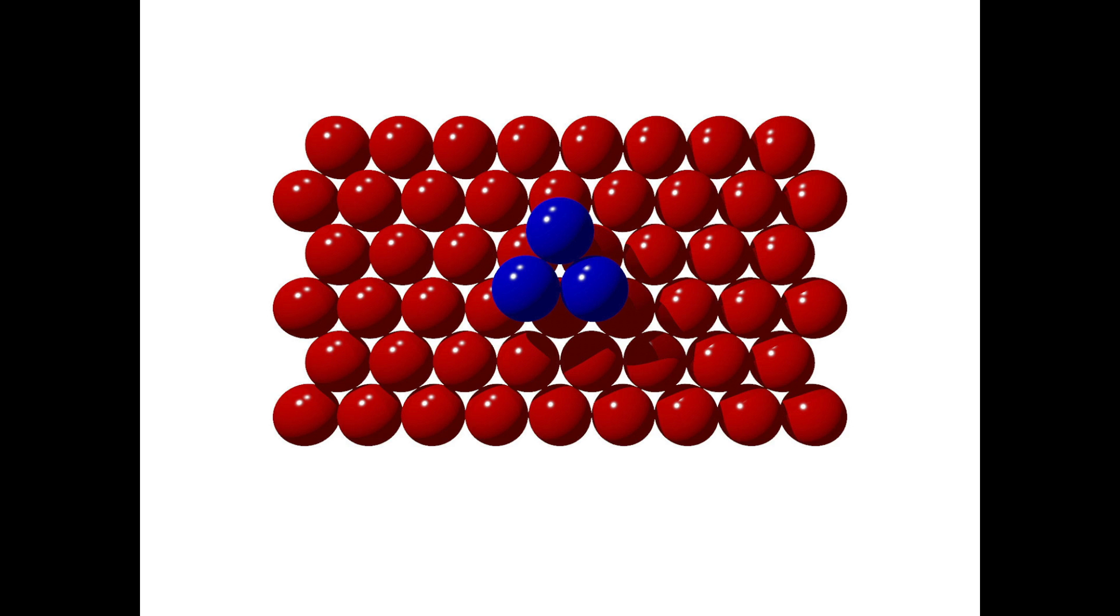This triangle of blue spheres is sitting on top of a triangle of red spheres. Highlighting these six spheres, we can see that they define an octahedral object.